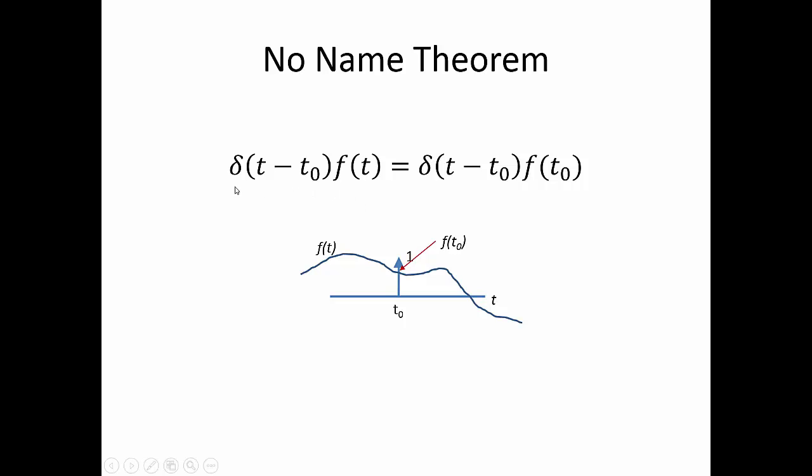Again, the no-name theorem is we take our impulse function, shift to anywhere, multiply by any arbitrary function. It's going to be that same impulse function at the same location, but it's now scaled by a constant. Changing that to a constant means you can move it outside of differentiation and integration. You can apply other linearity properties to it. And that's very, very helpful.